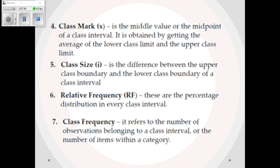Then there is class mark, denoted x, which is the middle value or midpoint of the class interval. It is obtained by averaging the lower class limit and the upper class limit — that is, (lower limit + upper limit) / 2. Then there is class size i, which is the difference between the upper class boundary and the lower class boundary of a class interval.